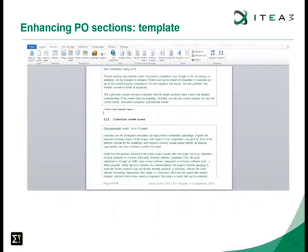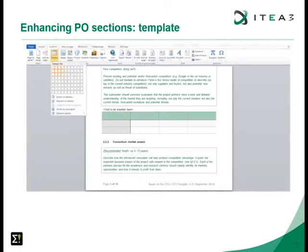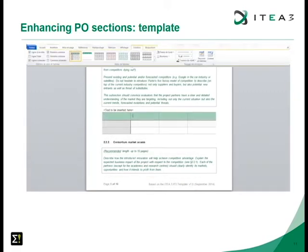Green boxes in the document are used to explain what is expected in each chapter; you can write your own text underneath them. Please use the built-in table styles when using tables — there are many options including banded columns, colored headers, and so on, as shown in the examples provided.